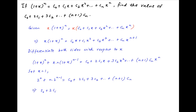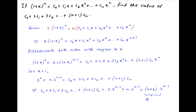Therefore the value of the expression given in the problem statement — C0 plus 2C1 plus 3C2 plus and so on plus (n+1)·Cn — is equal to 2·2^(n-1) plus n·2^(n-1), which equals (n+2) times 2^(n-1). This is the required result.